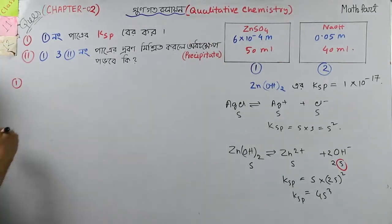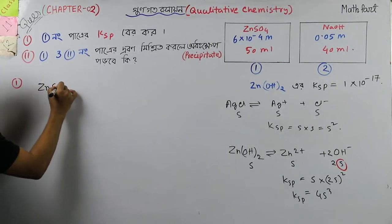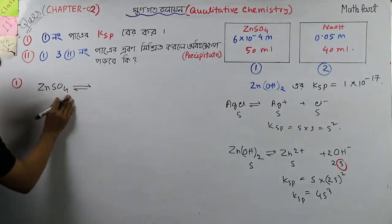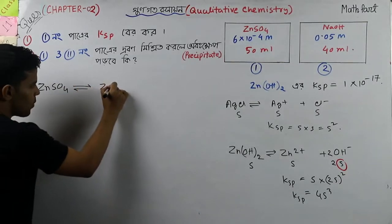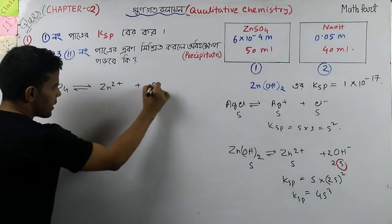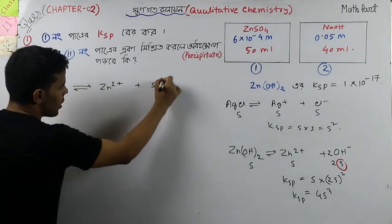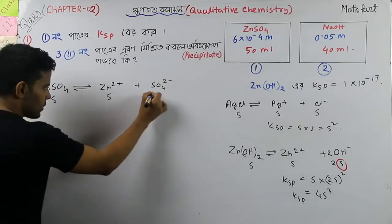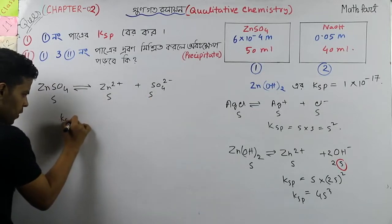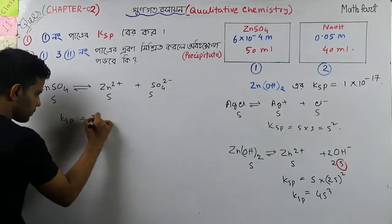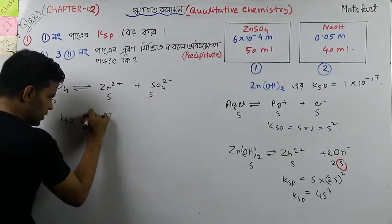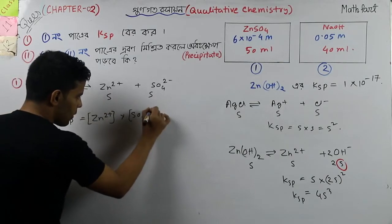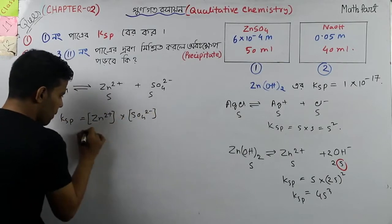The zinc sulfate says — I think zinc sulfate — the zinc sulfate is zinc 2 plus, and the sulfate is S, so the form is S into S. Then Ksp is calculated.